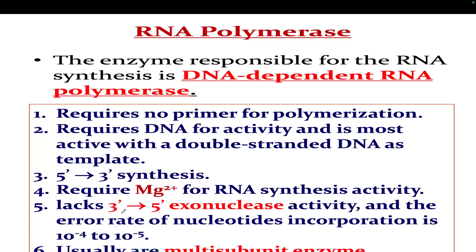Unlike DNA polymerase, RNA polymerase has no 3' to 5' exonuclease activity. This is because the error rate is already reduced during replication. The cell machinery rectifies all errors during replication before proceeding to RNA synthesis, so there is no need for the RNA polymerase to have exonuclease proofreading activity.